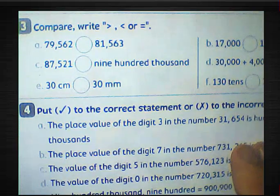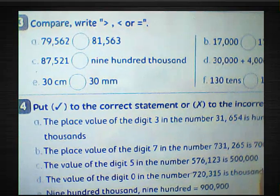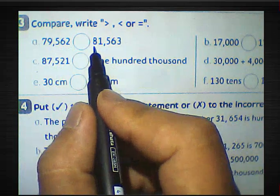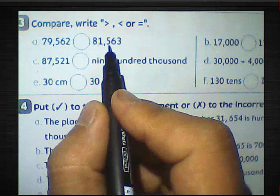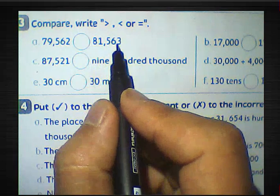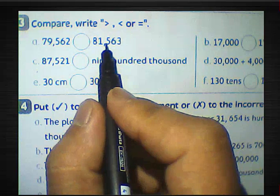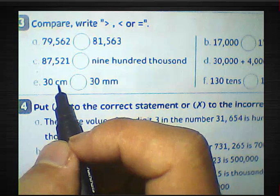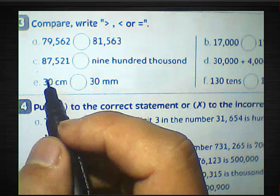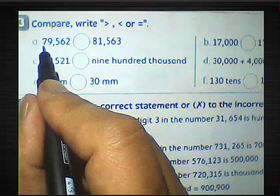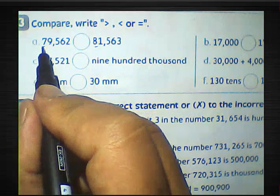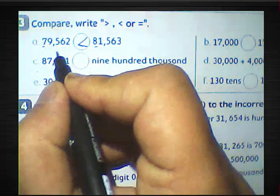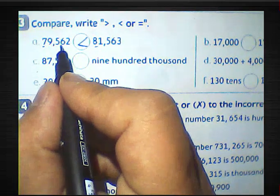Question number three — compare, write less than, more than, or equal to. Compare 79,562 and 81,563. We count the digits: both have 5 digits, so they are equal in number of digits. We look at the leftmost digit: 7 versus 8. Since 8 is more than 7, 81,563 is greater than 79,562.